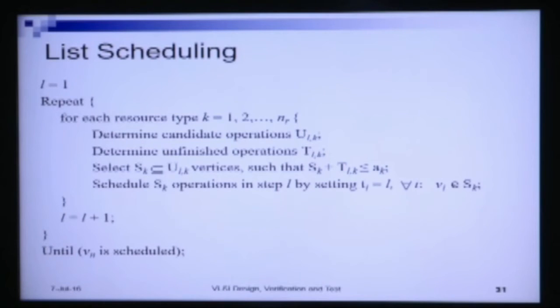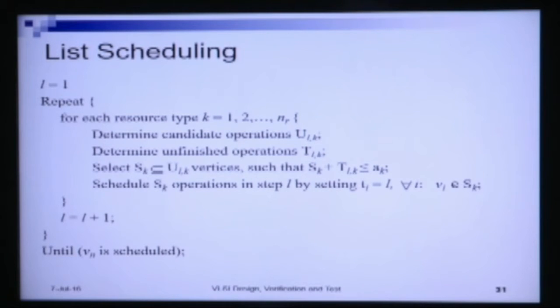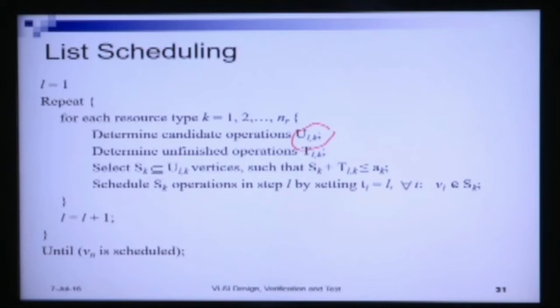We schedule the highest priority operations at each time step to the available resources. Not all resources may be available at a given time step, but whatever resources are available, the most important ready nodes are assigned to them. Now, looking at the algorithm: list scheduling proceeds time step by time step. Let l denote the time step, starting at 1. We assume k types of resources, k equals 1, 2, up to n_r. At each time step, for each resource type, we obtain candidate operations. U_l_k gives the number of ready-to-schedule operations of type k at time step l.